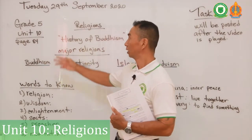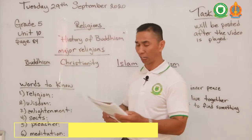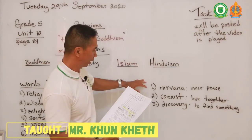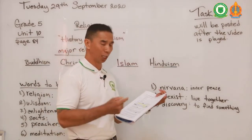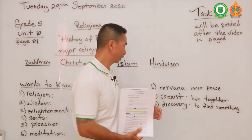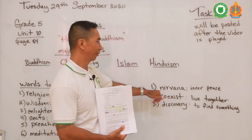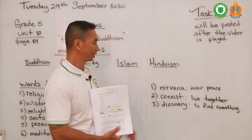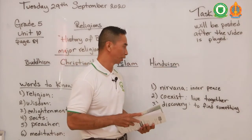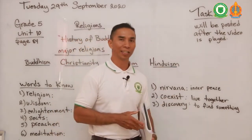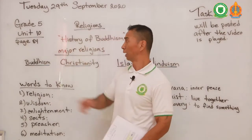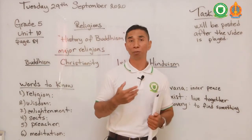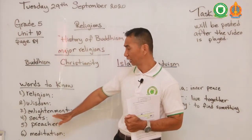Now on to our lesson for this video. I have three words here that will help you in doing your tasks. The first word is 'nirvana,' the second word is 'coexist,' and the third word is 'discovery.' Nirvana means finding an inner peace. For the religion we are studying — Buddhism — nirvana is one of the major aspects of Buddhism, where you have to find enlightenment.